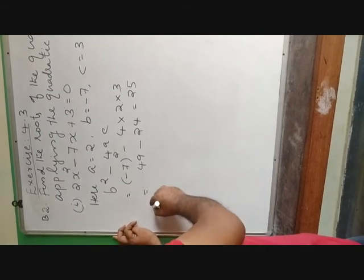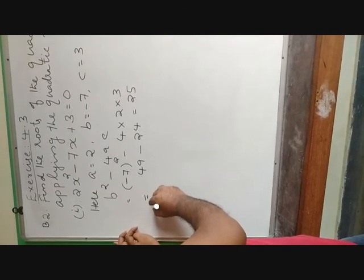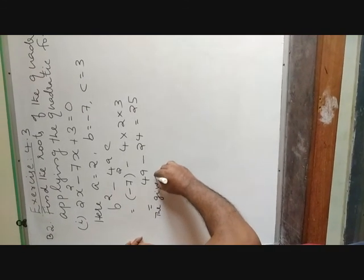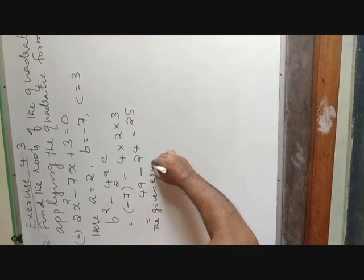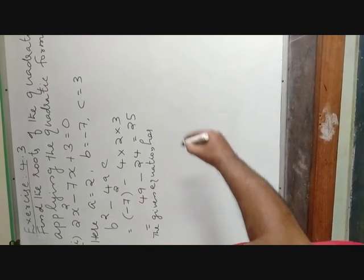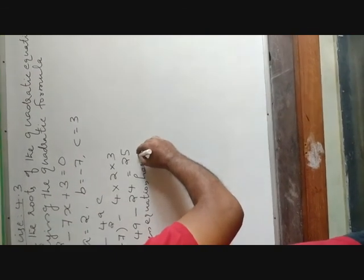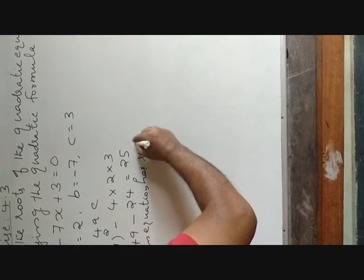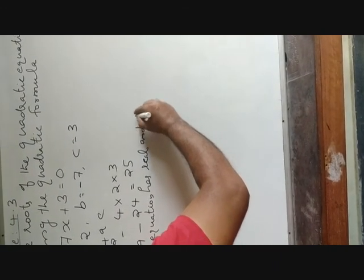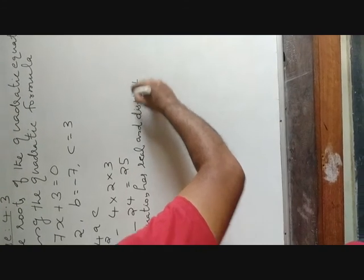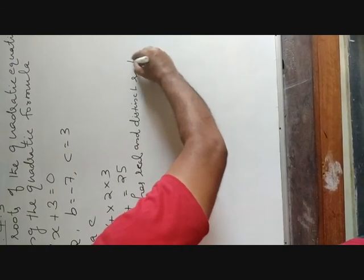Therefore, the given equation has real and distinct roots, because B squared minus 4AC is positive.